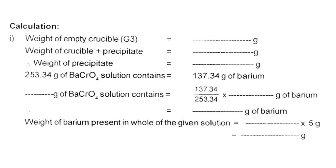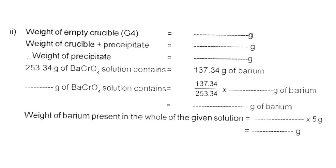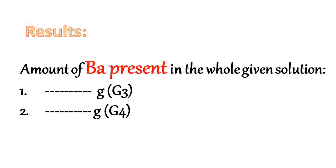The weight of barium present in the whole of the given solution equals that value multiplied by 5. We multiply by 5 because we started the experiment with 20 ml out of a 100 ml made-up solution. If you make up to 200 ml, multiply by 10; if 250 ml, multiply by 12.5. Likewise, we can calculate the weight of barium for the duplicate experiment and determine the amount of barium present in the whole of the given solution. Thank you.